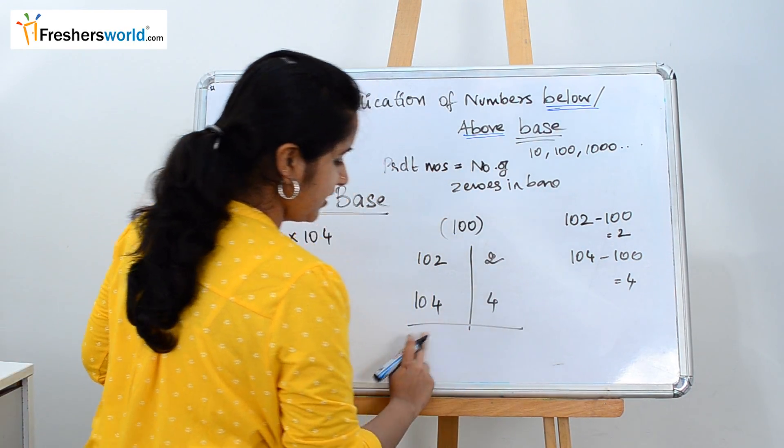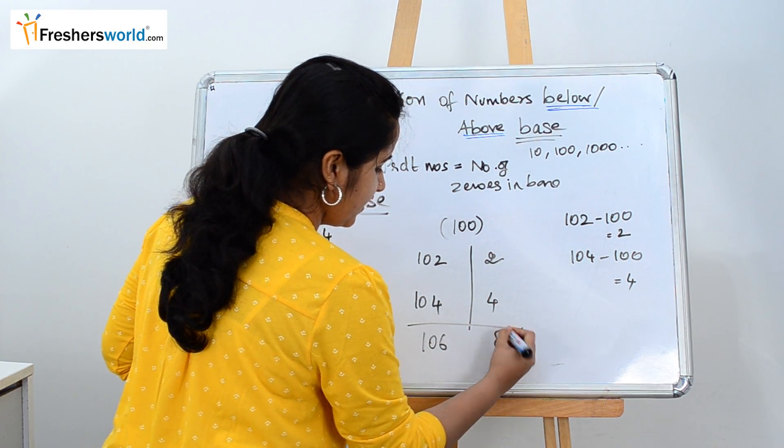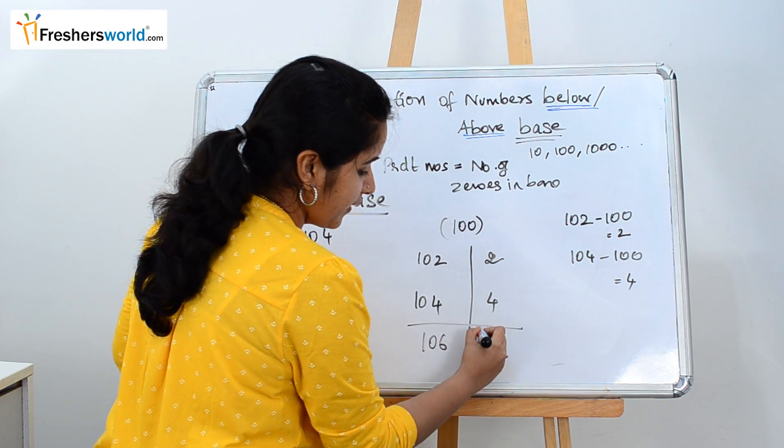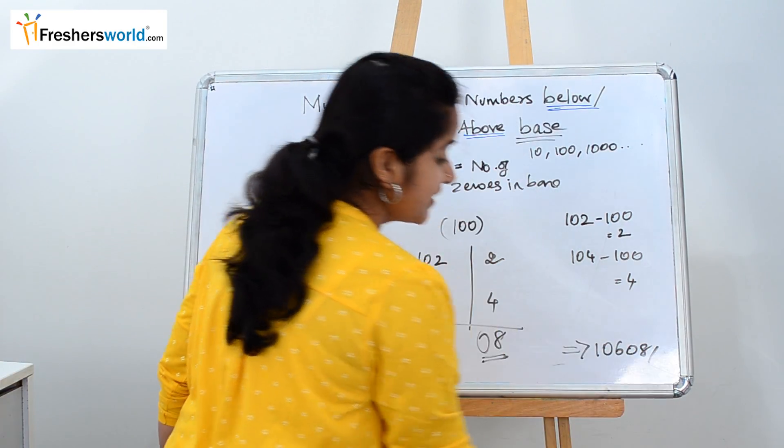Similarly the sum here and the product here. Sum is 106 and 4 times 2 is 8. The number of digits is 1 here and the number of zeros are 2. So we have to put one more 0 here. 10608. It is as simple as that.